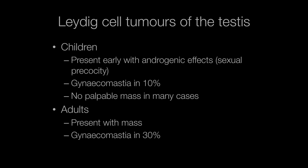Because the androgenic effect is more pronounced in children, they present early and are much smaller than in adults at presentation and are not palpable in many cases. In contrast, in adults Leydig cell tumours usually present as a mass, and in 30% of cases there may be gynecomastia. Gynecomastia may also occur in association with Leydig cell tumours in children, particularly in approximately 10 percent of cases.